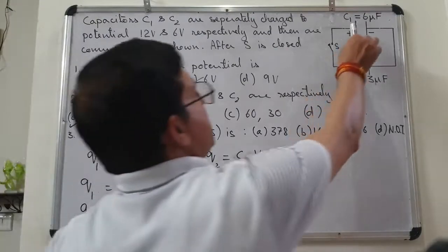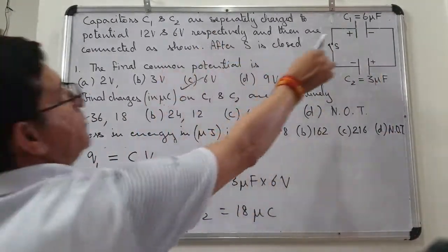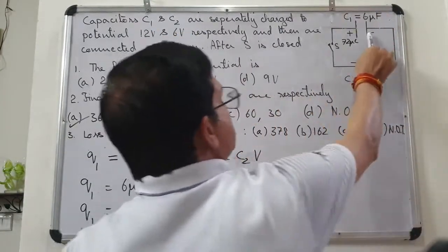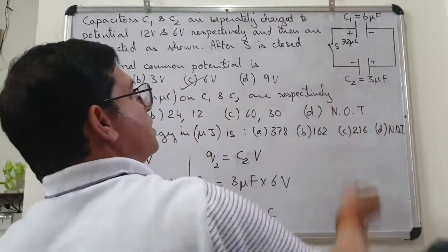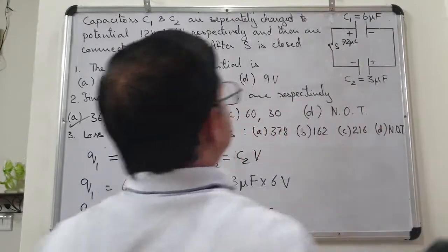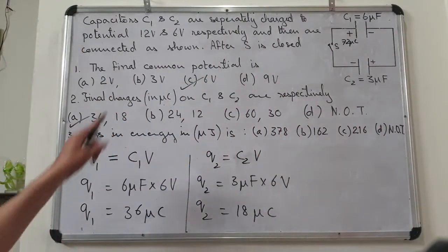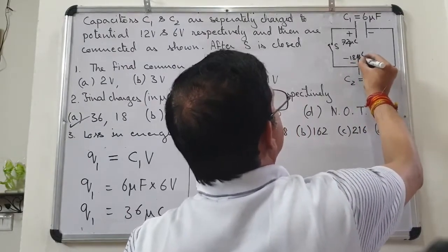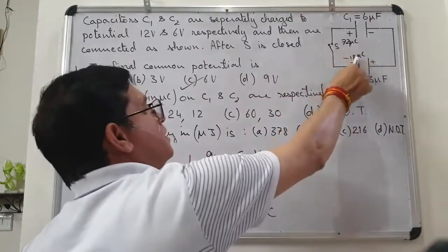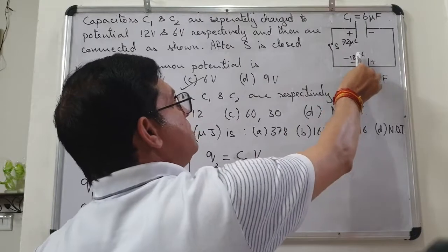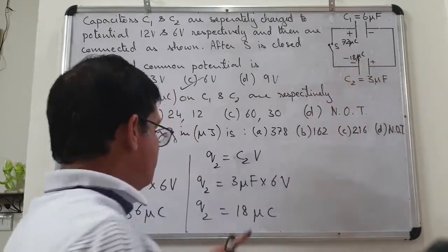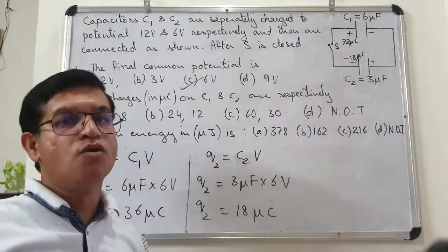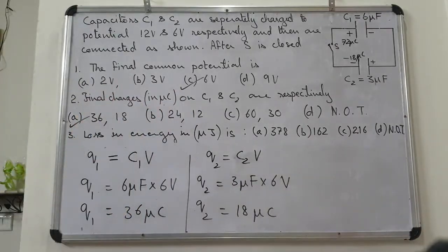Verification: initially C1's connected plate had +72μC (6μF × 12V) and C2's connected plate had −18μC (3μF × 6V). Total initial charge = 72 + (−18) = 54μC. Final total charge = 36 + 18 = 54μC. Charge is neither created nor destroyed — law of conservation of charge holds. This completes the second question.